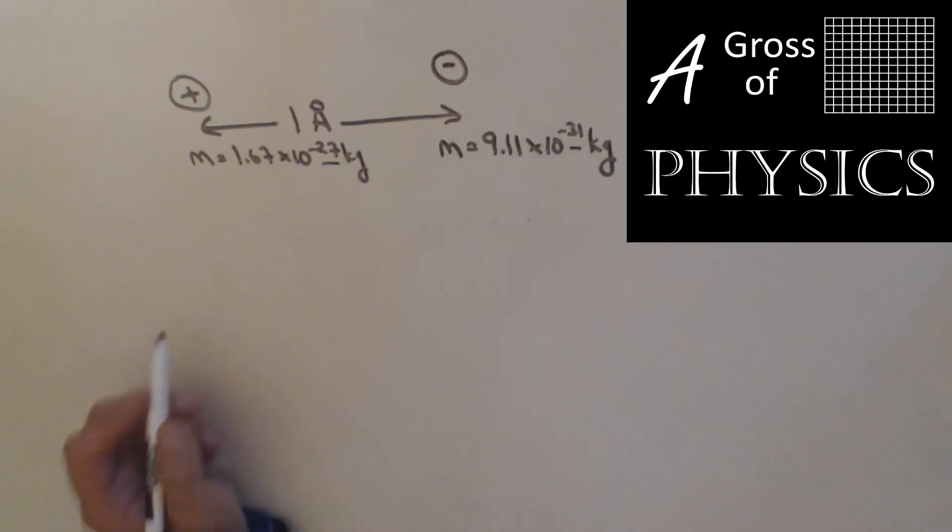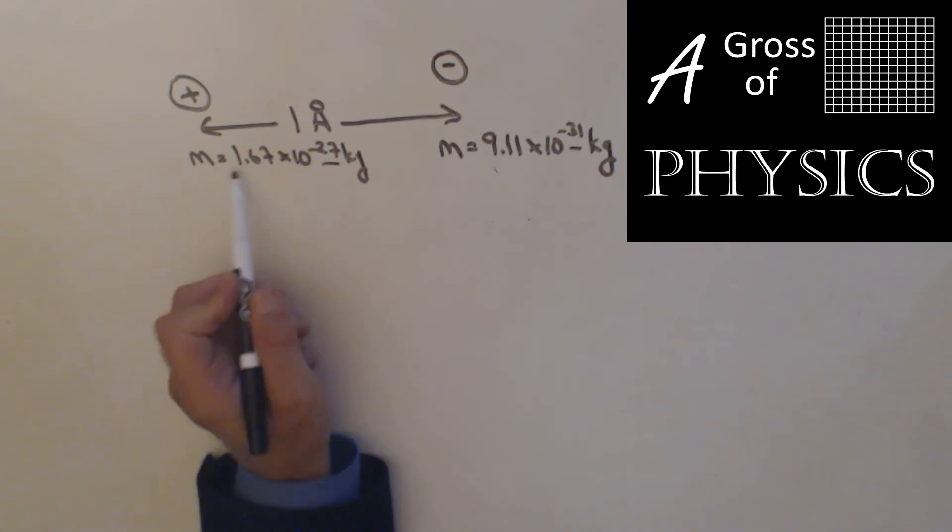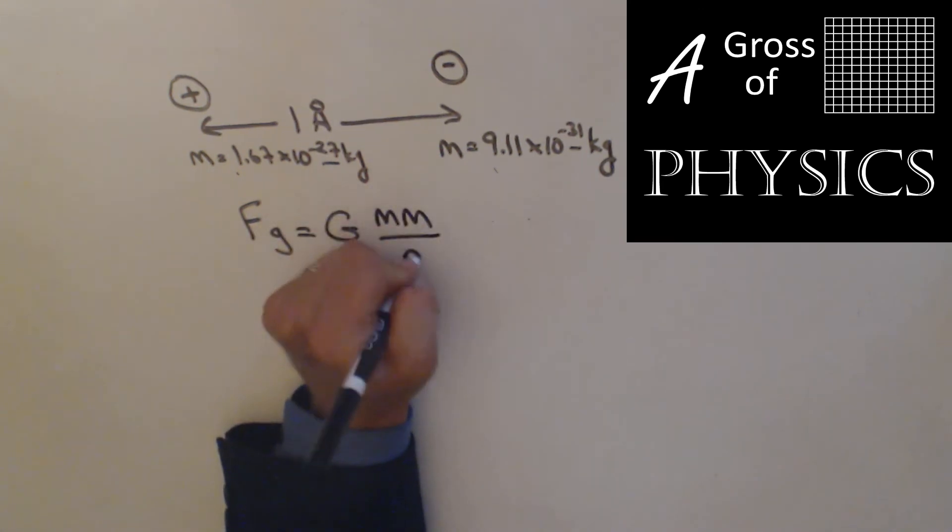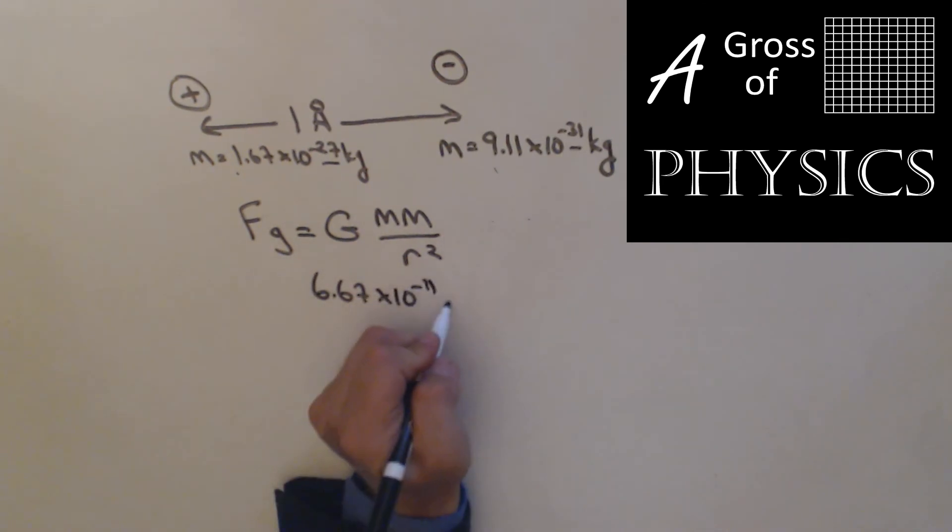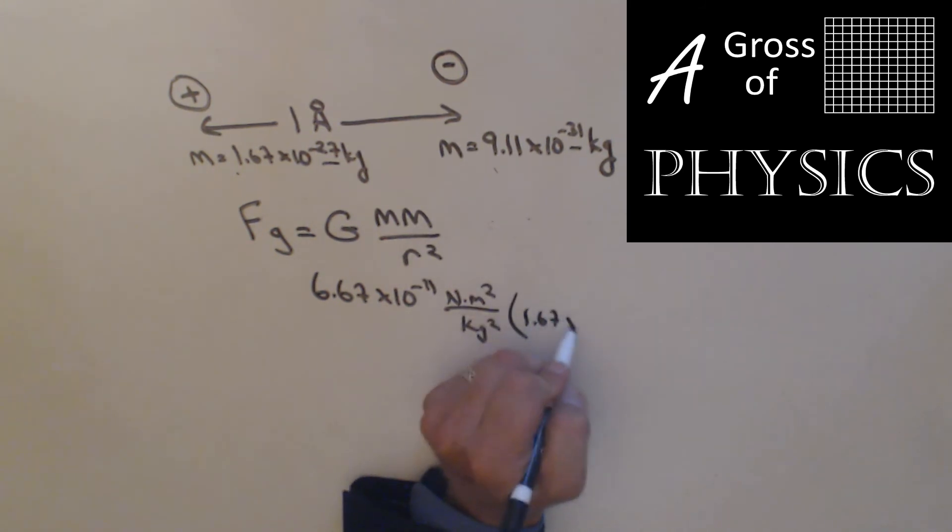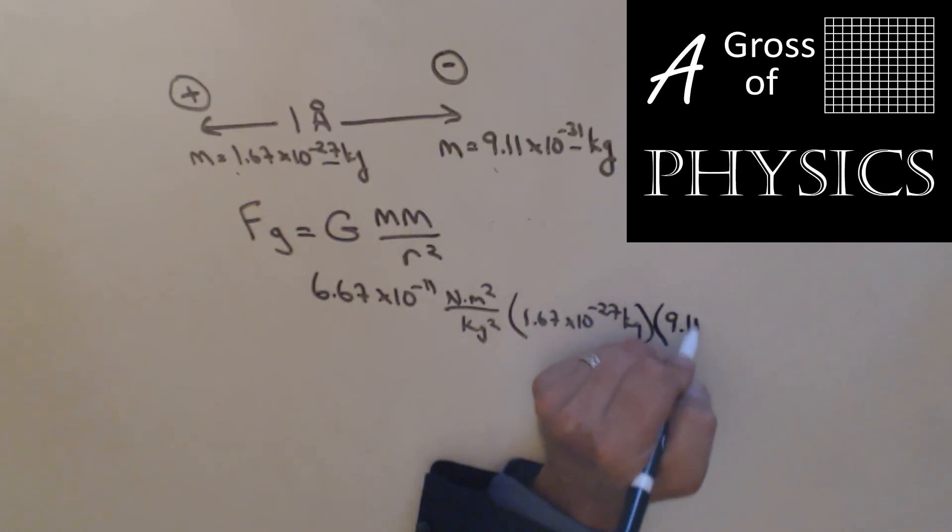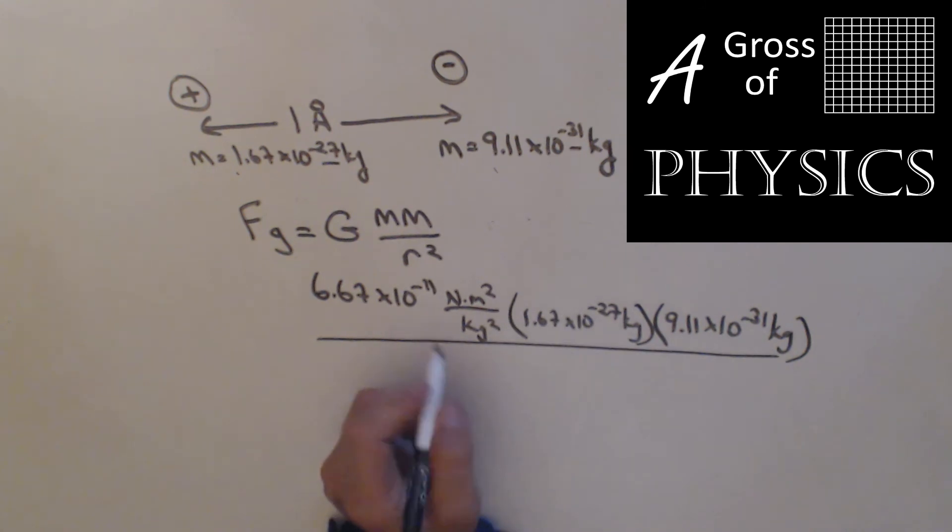10 to the negative 27, 10 to the negative 31, that's a difference of 10 to the 4. But because this is a 9 and that's a 1, it's about a thousand times bigger. Can we find the force of gravity? Big G m m over r squared: 6.67 times 10 to the negative 11 Newton meters squared over kilograms squared, times 1.67 times 10 to the negative 27 kilograms, times 9.11 times 10 to the negative 31 kilograms, over 1 angstrom.